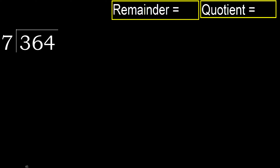364 divided by 7. 3 is less, therefore next: 36 is not less. With 36, 7 multiplied by which number is nearest to 36 but not greater? 7 multiplied by 6 is 42 — 42 is greater. Multiply by 5: 35 is not greater.